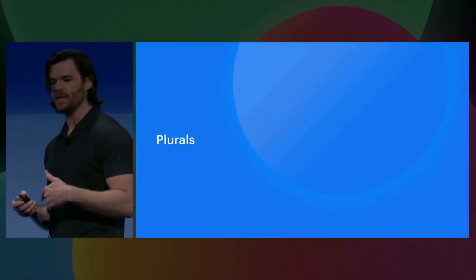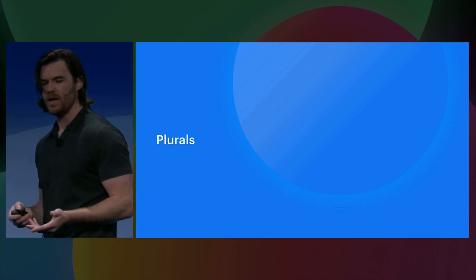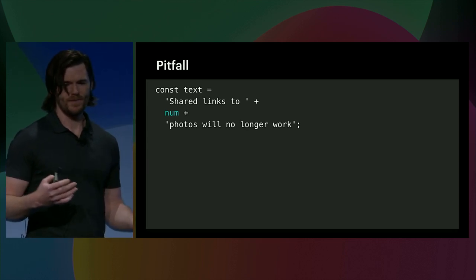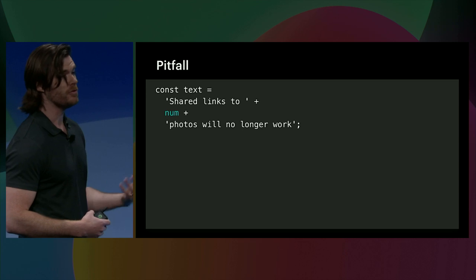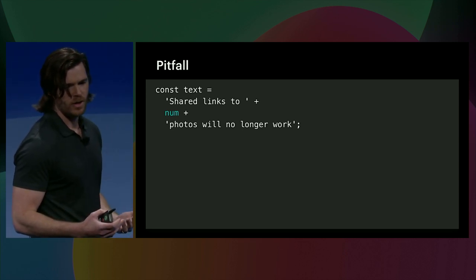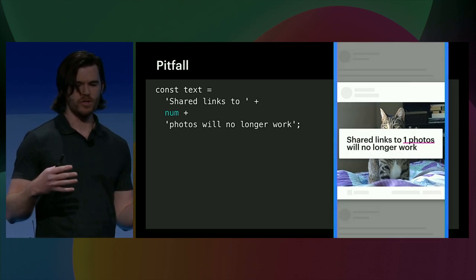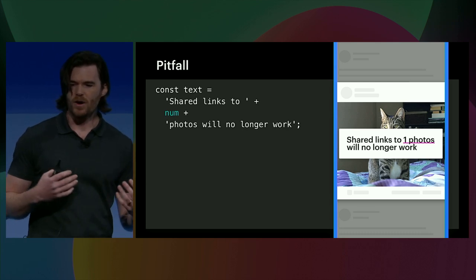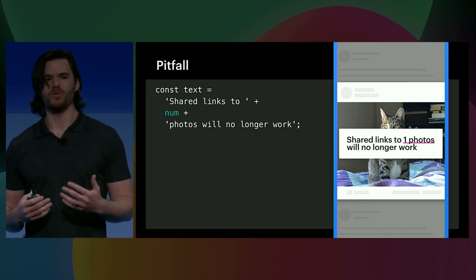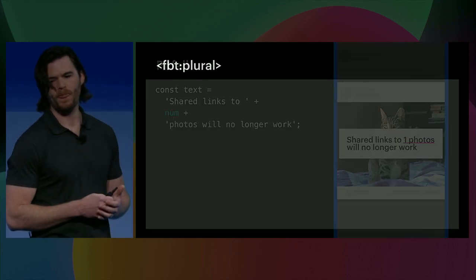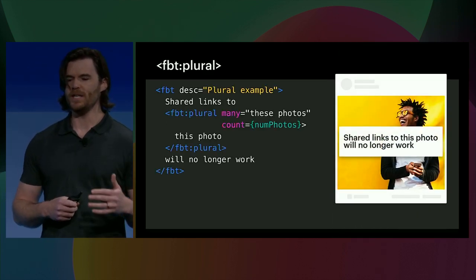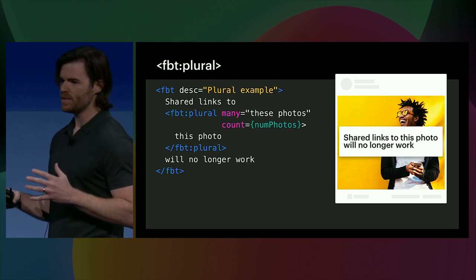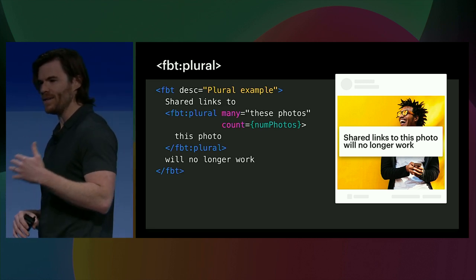One of the more common struggles in constructing text in both English and non-English strings is handling plurals. So here's our pop quiz number one — what's wrong with this text? This example not only breaks in other languages, but in English itself. We create the string 'shared links to one photos will no longer work.' And on top of creating that 'one photos' string, languages such as Arabic have five other tenses that are potentially broken if this were to be translated as-is. FBT provides the FBT plural construct to make writing correct English grammar easier and to enable translations to multiplex into all the variations as determined by the translator.